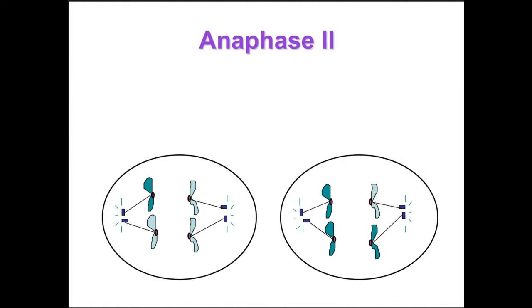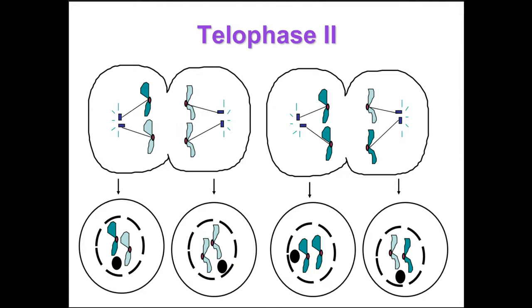In anaphase two, the sister chromatids separate. The sister chromatids of each chromosome now move as two newly individual chromosomes toward opposite poles. In telophase two and cytokinesis two, the chromosomes arrive at opposite poles, the nuclei reform, and the chromosomes begin to decondense. At the end of meiosis there are four daughter cells, each with a haploid set of unduplicated chromosomes, and each daughter cell is genetically distinct from the others and from the parent cell.